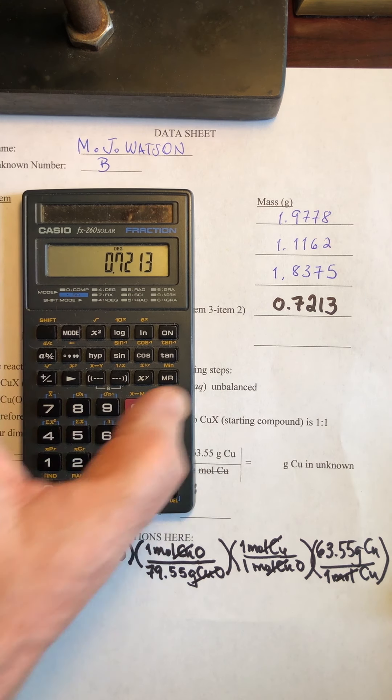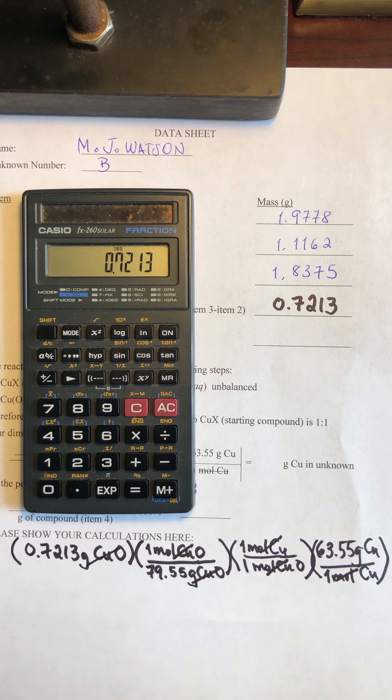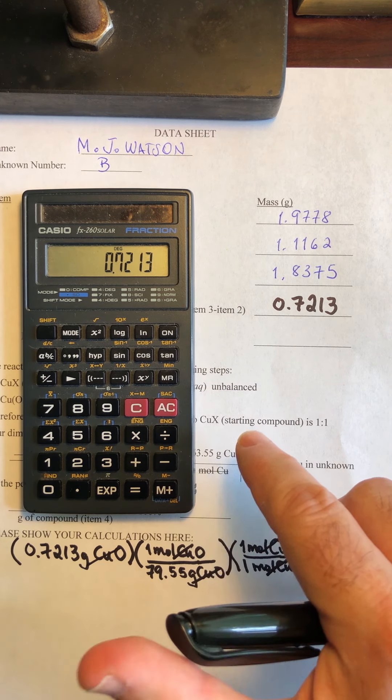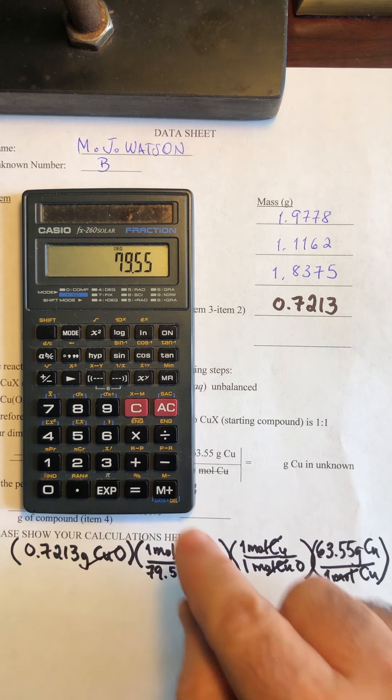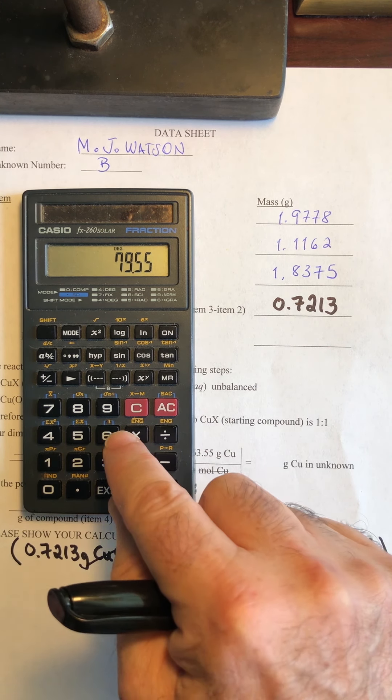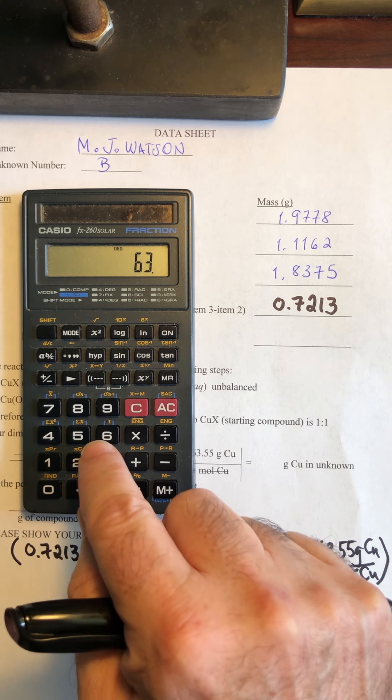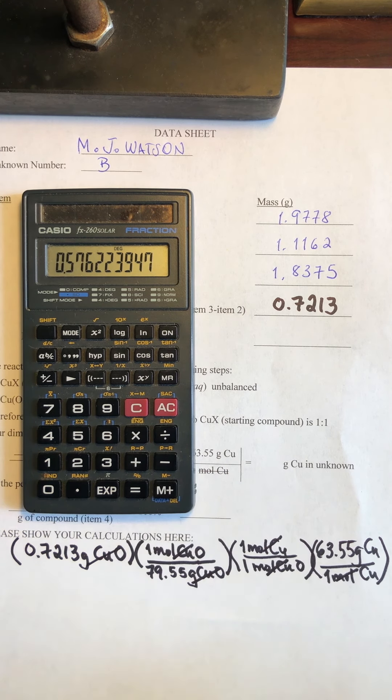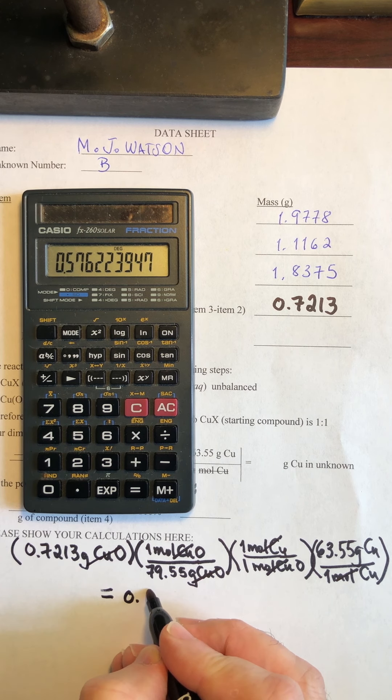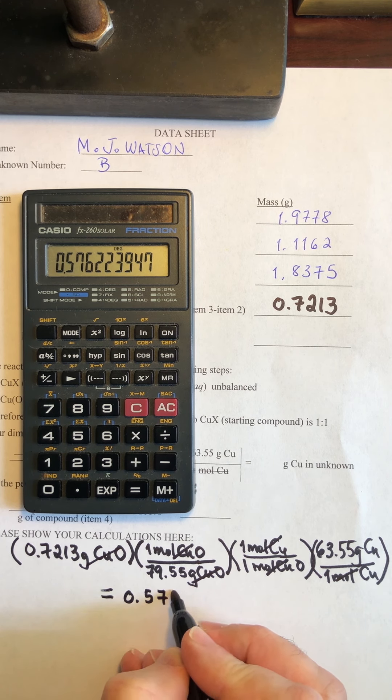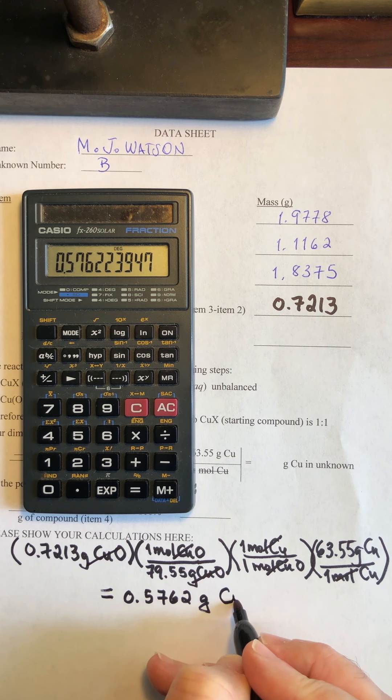So this is now going to give us the grams of copper in my original compound here. So let's see what that is. Let's do the calculations. We have here the mass. I left it in the calculator. We're going to divide by 79.55. This is one. And we're going to multiply times 63.55. And that gives us 0.5762.